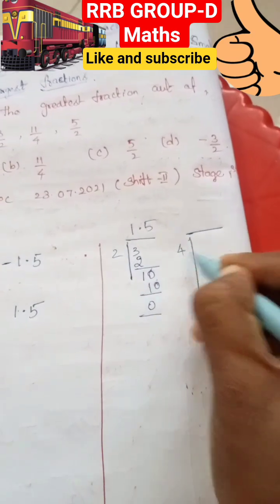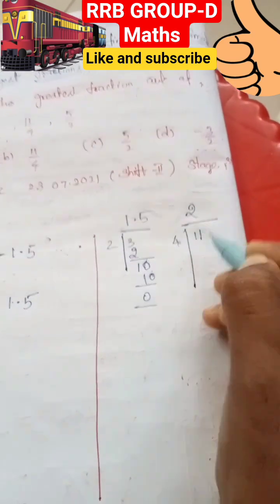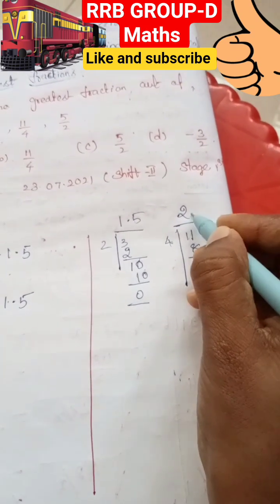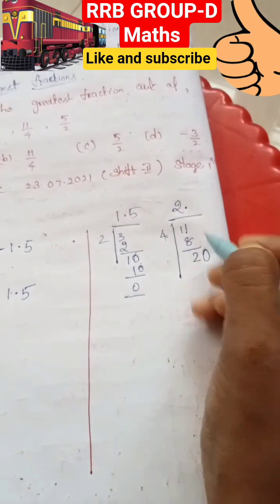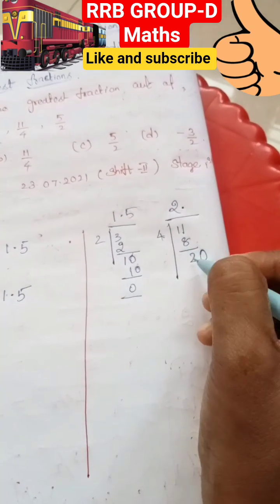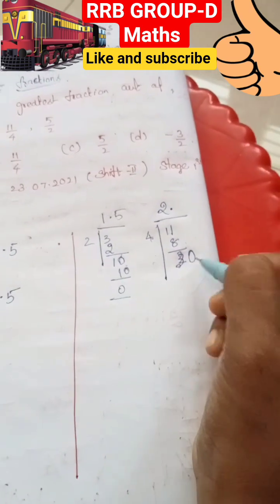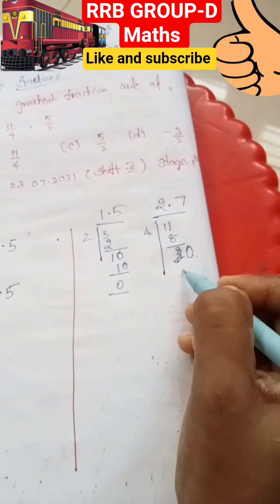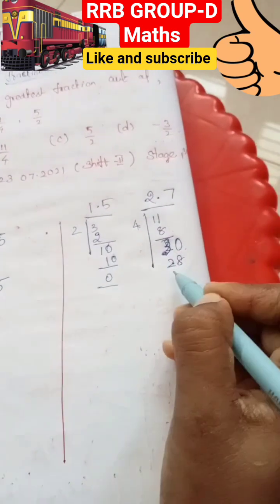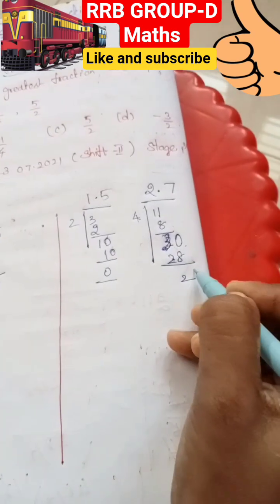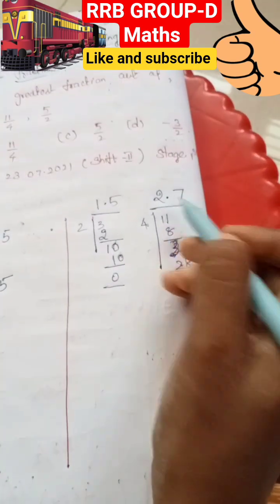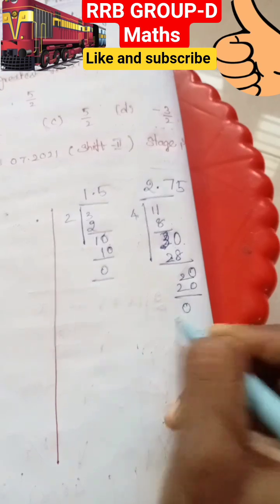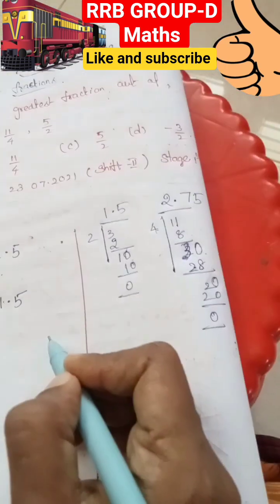Next one: 11 by 4. So 4 goes into 11. 2 fours are 8, remainder 2. So decimal point. 5 fours are 20, remainder 0. So 2.75.